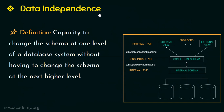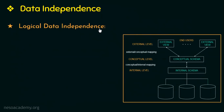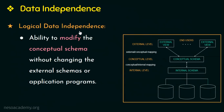There are two types of data independence. The first type is logical data independence, which works between the conceptual schema and the external schema. It is the ability to modify the conceptual schema without having to change the external schemas or the application programs. For example, if we add a new attribute, that modification of the conceptual schema will not affect the external schema because of logical data independence.